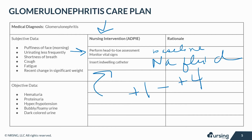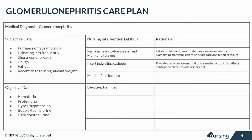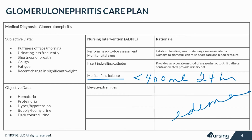Insert an indwelling catheter as necessary, as this will provide a more accurate method of measuring output. If a catheter is contraindicated, be sure to provide a urinary hat for the toilet to measure urine. It is critical to monitor fluid balance in these patients. Measure for decreased output less than 400 mLs in a 24-hour period, which may be evident by dependent edema. Measure daily weights at the same time each day on the same scale. Greater than 5 kg per day is indicative of fluid retention.